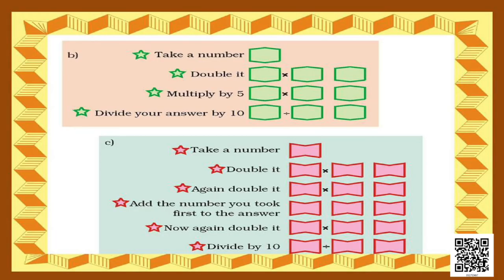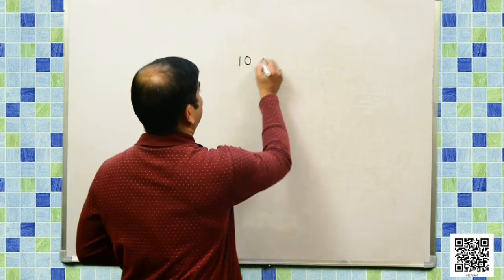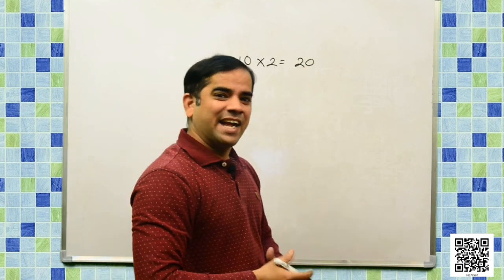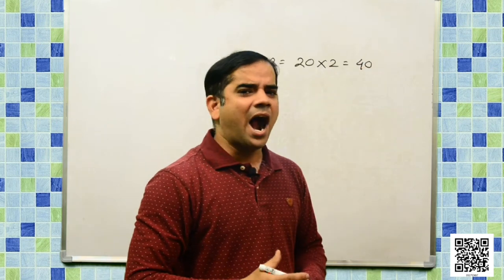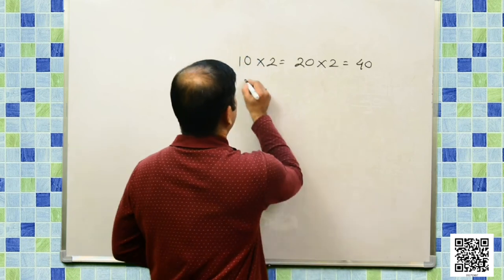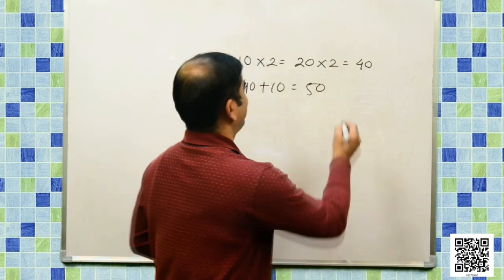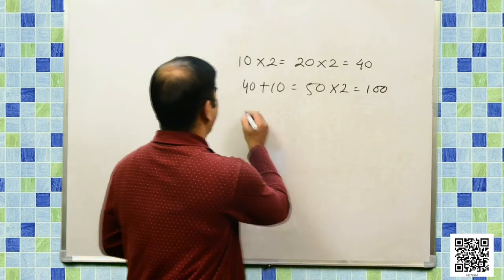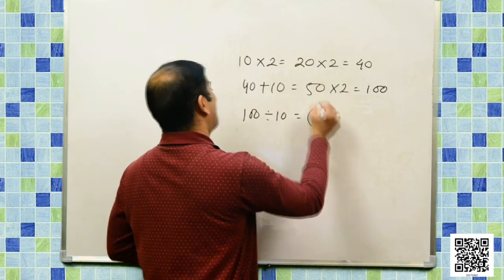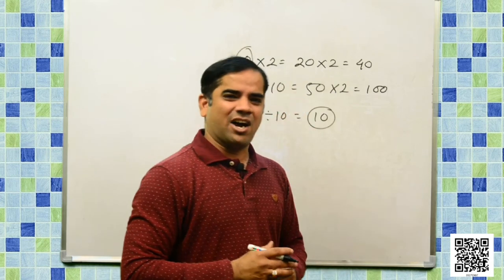Let us now discuss another series of numbers. Let the number be 10. Double it: 10 times 2 equals 20. Double it again: 20 times 2 gives 40. Add the number you took first: 40 plus 10 equals 50. Double it again: 50 times 2 equals 100. Divide it by 10: 100 divided by 10 gives us 10, which is the number we initially took. This is another series of numbers.